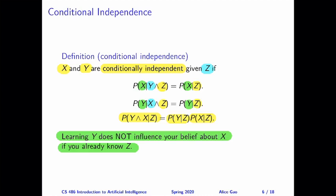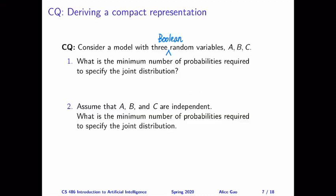The first property is how we can use these independence assumptions to derive a compact representation of a probability distribution. The second is how we can use these definitions to verify the independence relationship between some random variables, given a probability distribution. First, let's think about how we can take advantage of these independence assumptions to derive a compact representation of a joint probability distribution.